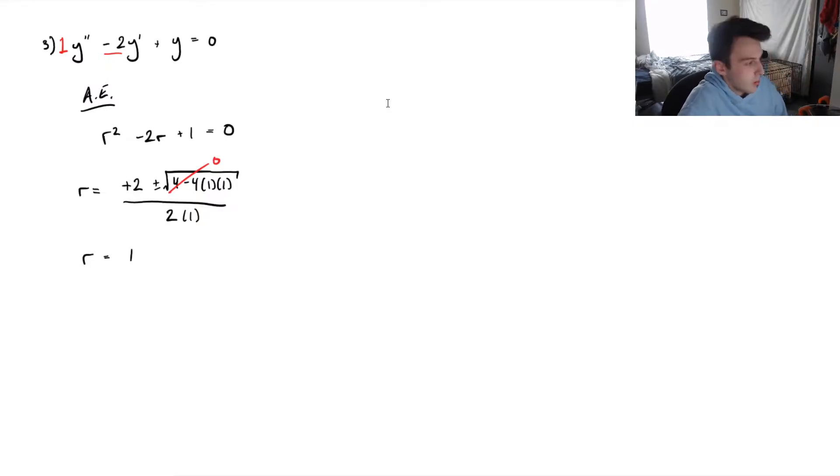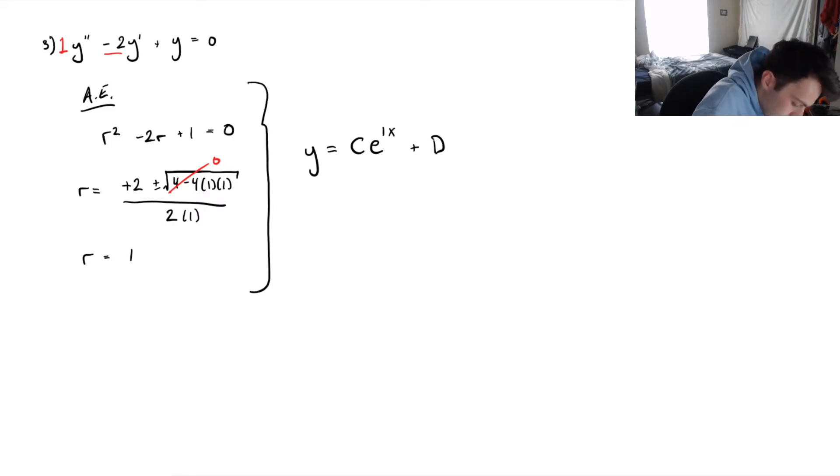And, we already went through how to find the form of the solution when we only find one real root. So, now that we know this, it's super easy. All we'd say is that the general solution is some constant c times e to the r, which is 1, x, plus our other solution d, which is another constant, and this is going to be x times e to the rx.